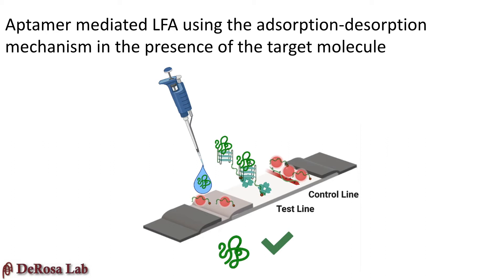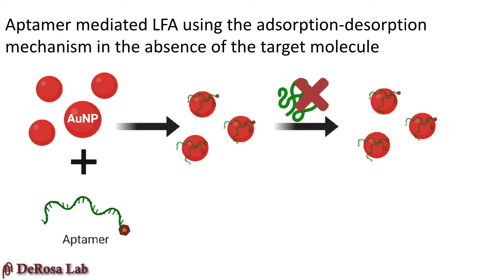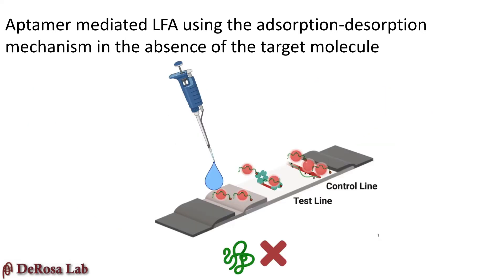Since the aptamers are no longer passivated to the nanoparticle surface, the aptamer-target complex is captured at the test line by immobilized streptavidin molecules, so no colored signal appears. The PDDA polymer at the control line will still give a color signal to indicate the test was run successfully. In the case of no target, the aptamer will remain passivated to the nanoparticle surface. On the strip, the aptamer-nanoparticle complex will be captured at the test line and, as a result of the sustained aptamer passivation, will result in a colored signal.